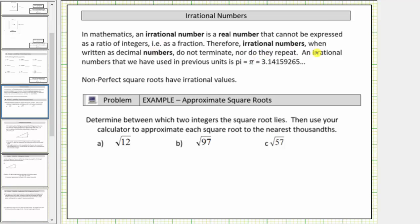Therefore, irrational numbers, when written as decimal numbers, do not terminate, nor do they repeat.